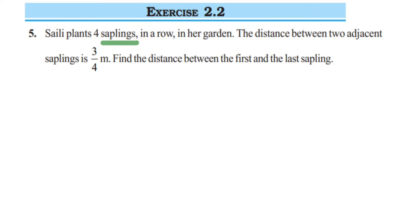She bought 4 saplings and she wants to put it in a row. They have given the distance between each sapling. Adjacent sapling means from one sapling to the other sapling, the distance should be 3 by 4 meter. Let me do it row wise here. Suppose the first sapling is here, second one is here, third one here, and fourth one here.